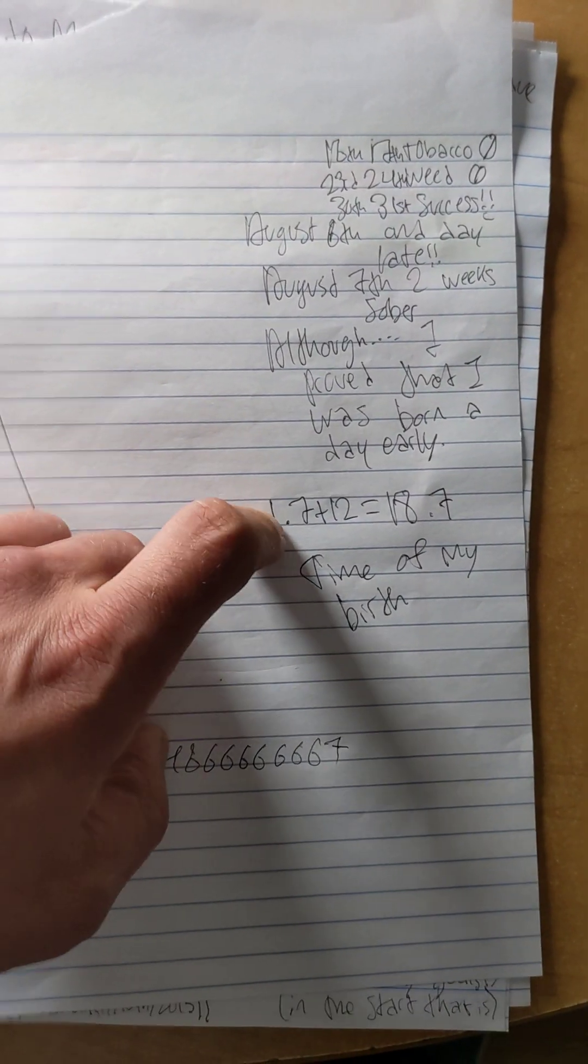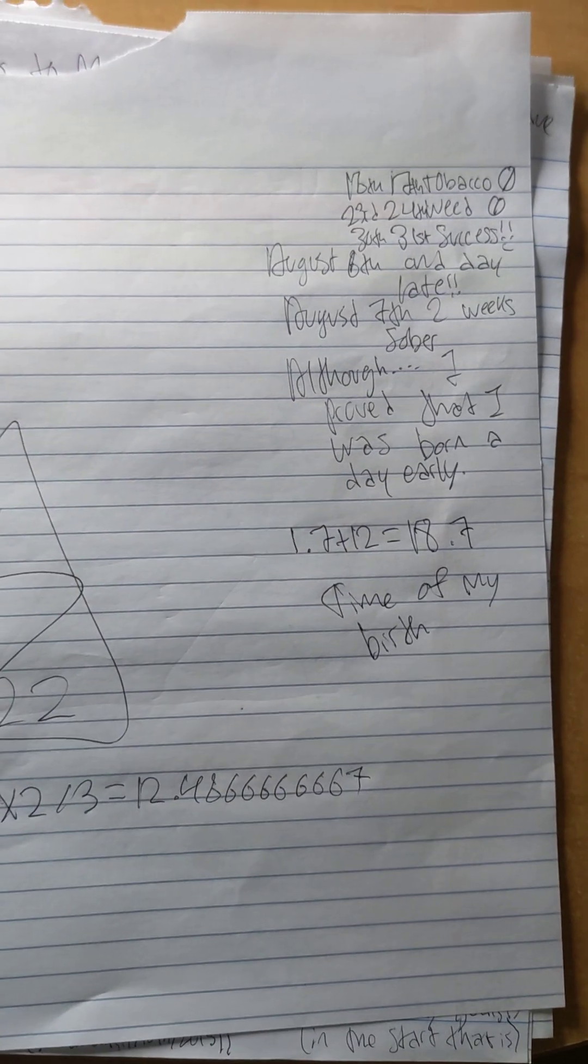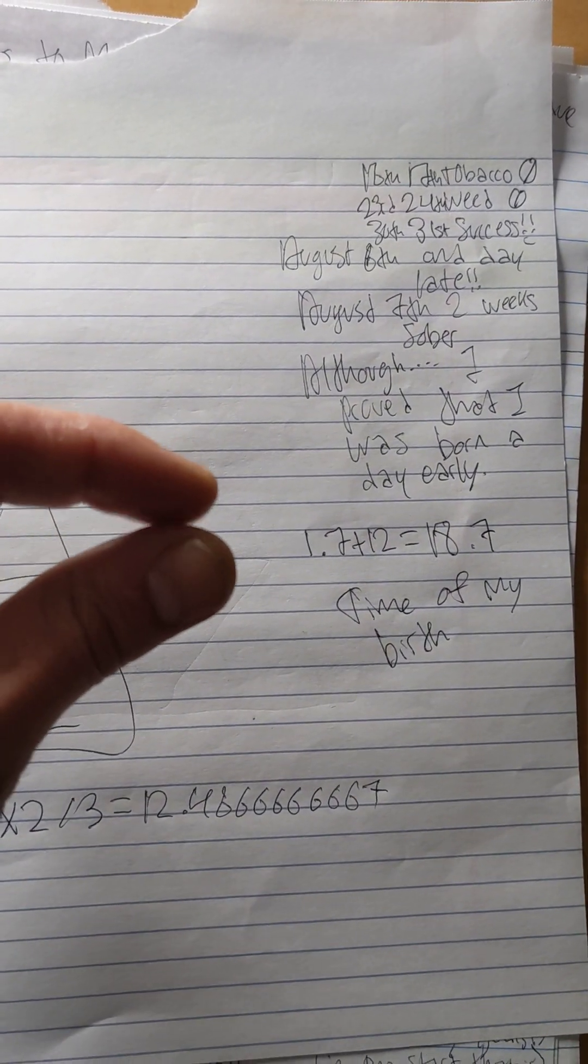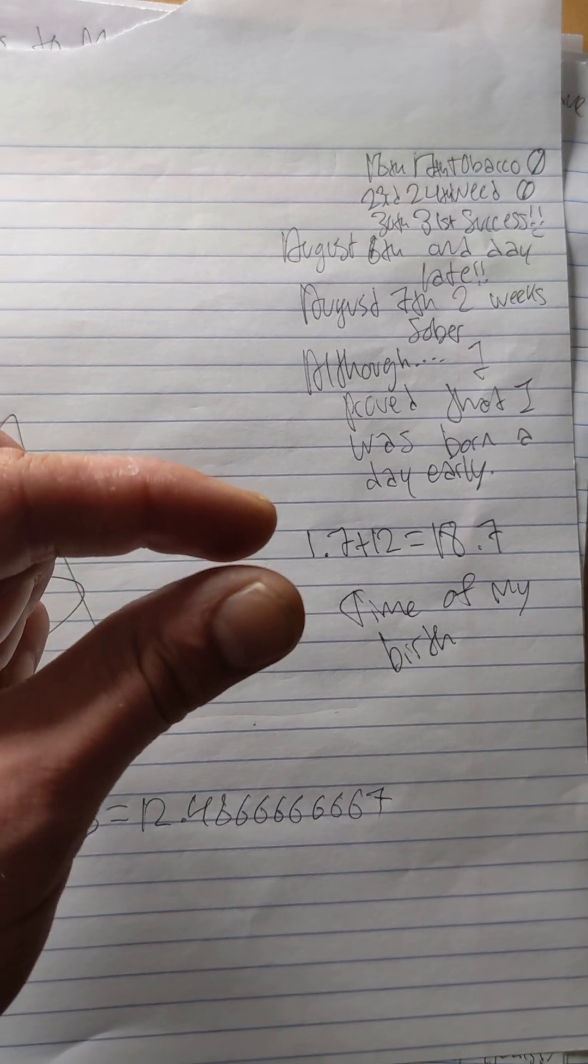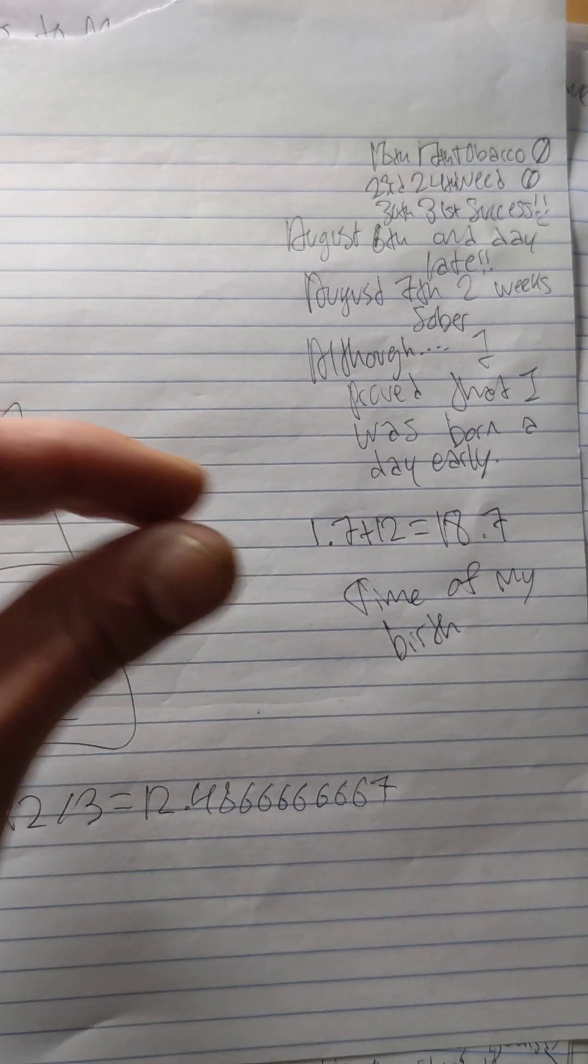So according to my math, I would have been born on January 12th if the years were all lined up, which would have been exactly half. Flora's born on June 6th. So if I was born on the 12th, it would have been perfect.